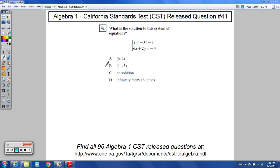Hello and welcome to Algebra 1 release question number 41. What is the solution to this system of equations? We've got two equations: y equals negative 3x minus 2, and 6x plus 2y equals negative 4.